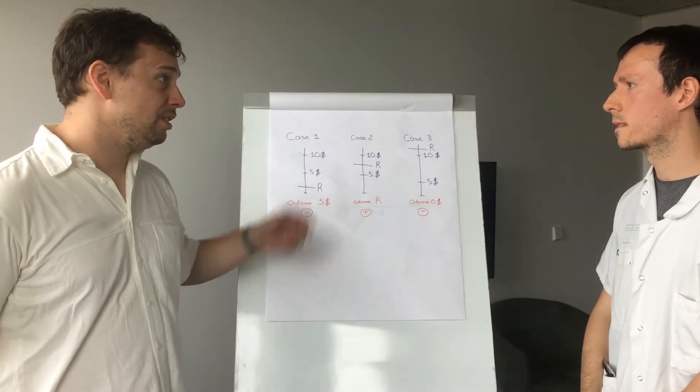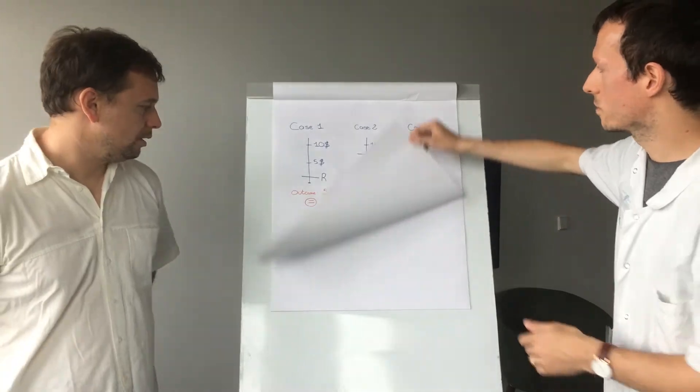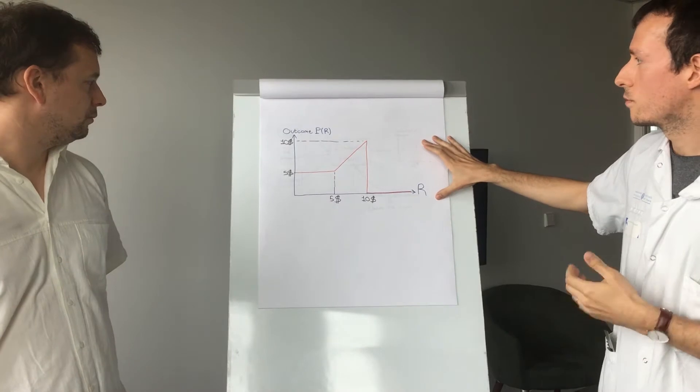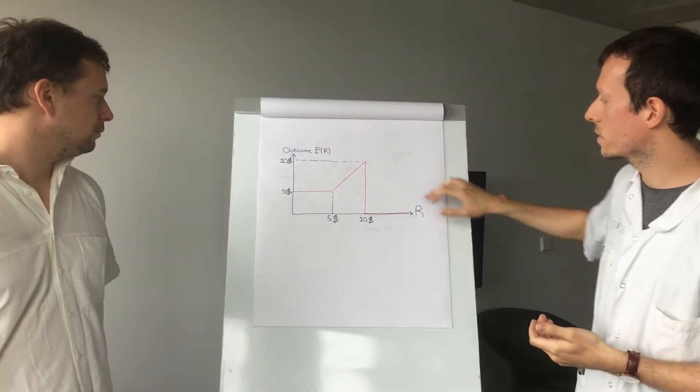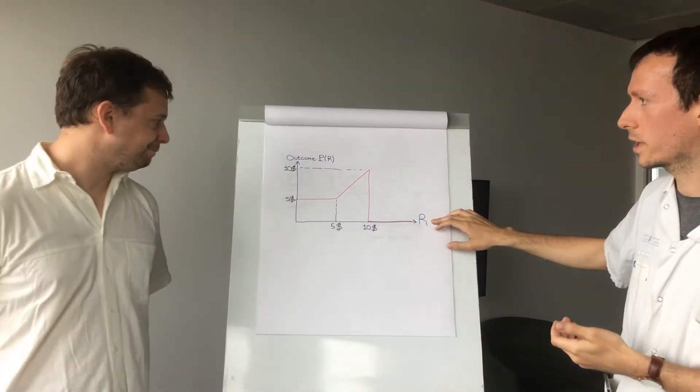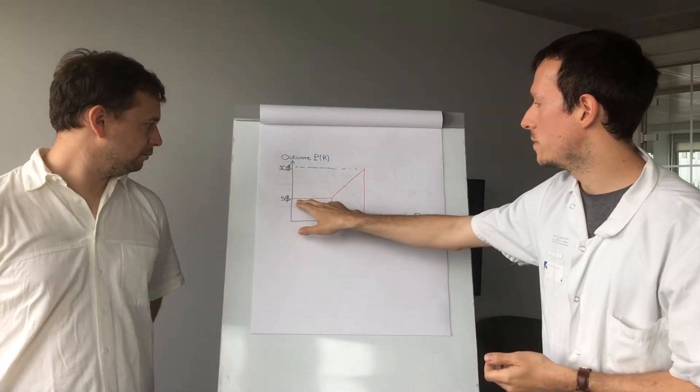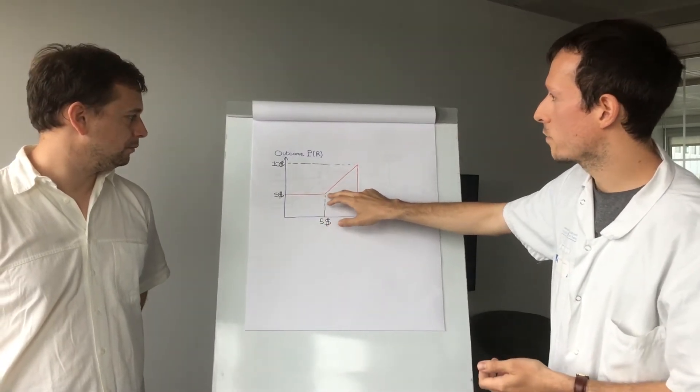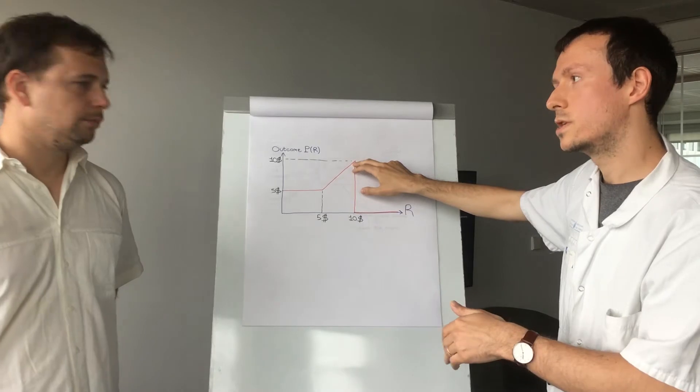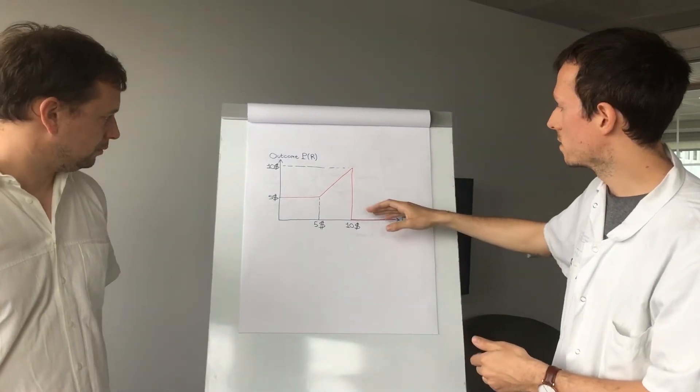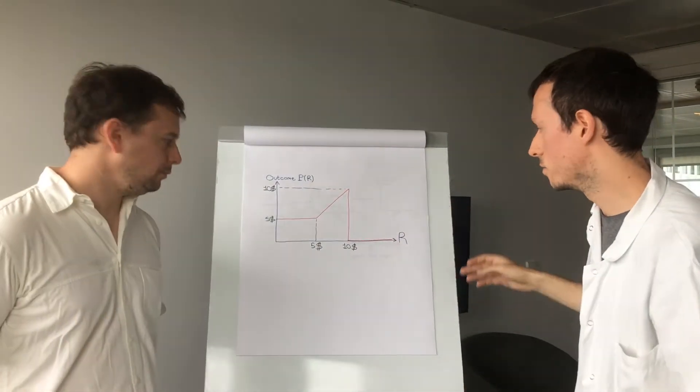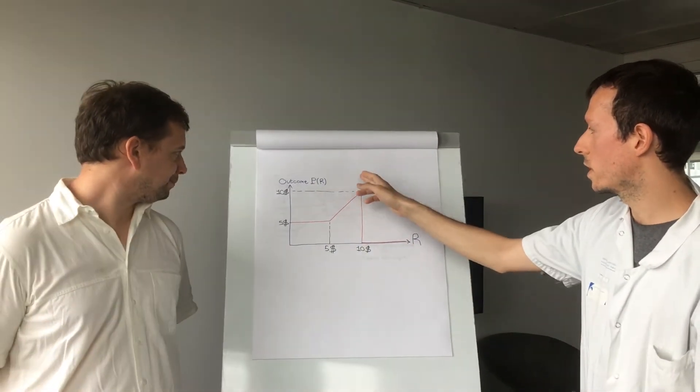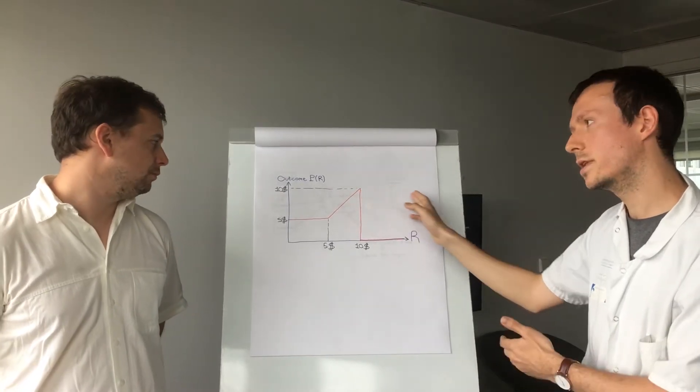But how do you set this reserve price, actually? I will show this to you. This plot represents the outcome of the auction as a function of the reserve price. Okay? So, when your reserve price is below $5, the reserve price is actually useless. Then, if the reserve price is between the two highest bids, the reserve price will increase your revenue. And then, your revenue comes to zero and you lose everything. So, do you get the idea? Yeah. The idea is to set the reserve price very close to the first bid, but not higher.